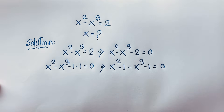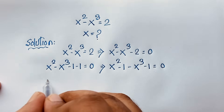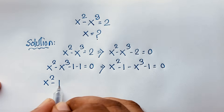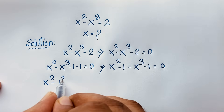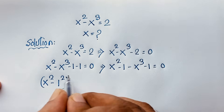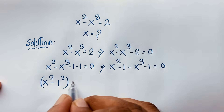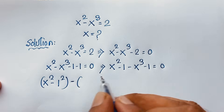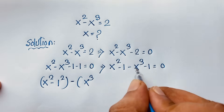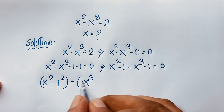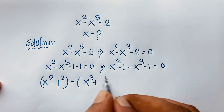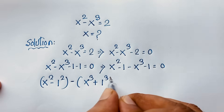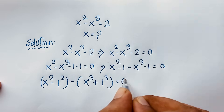Now, x squared minus 1 — I use here 1 squared, so 1 squared will be 1 — and I take the negative sign as common. So it will be x cubed minus, minus, it will be plus, then this is 1. I take here 1 cubed — it is equal to 0.